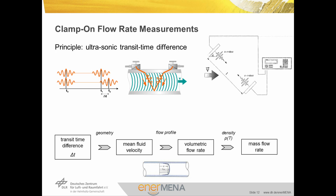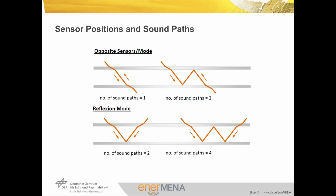Finally, the mass flow rate is derived from the volumetric flow rate with the help of the temperature-dependent HTF density. For transit time difference ultrasonic flow measurements, the flow should be turbulent. As both fluid viscosity and density are temperature-dependent, the fluid temperature must be measured in the vicinity of the flow measurements, with the respective characteristics stored in the evaluation device. In opposite mode, the sensors are mounted on opposite sides of the pipe and the number of sound paths is uneven, making it rather challenging to position them exactly facing one another.